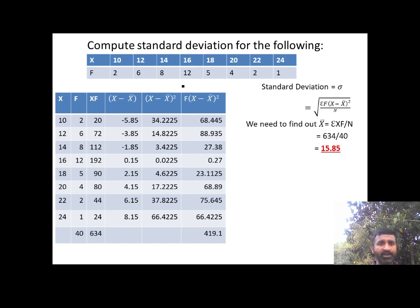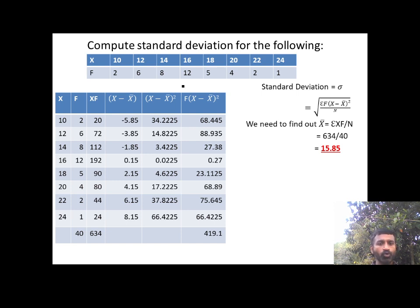Now for each x value — 10, 12, 14, 16, 18, 20, 22, 24 — we compute x minus 15.85. That gives: 10−15.85=−5.85, 12−15.85=−3.85, 14−15.85=−1.85, 16−15.85=0.15, 18−15.85=2.15, 20−15.85=4.15, 22−15.85=6.15, and 24−15.85=8.15.